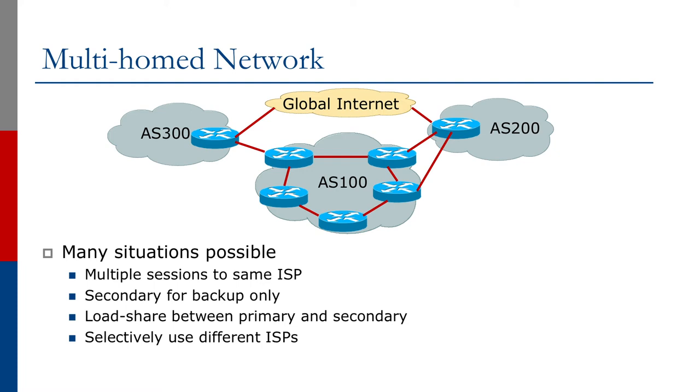We could have one AS providing backup to the other, or maybe one of the two links between AS100 and AS200 provides backup to the other link. How to tackle this is really the goal of the next set of examples in this series. There is no magic BGP multi-home command available in any vendor CLI. This is where an understanding of how to implement policies within BGP becomes very important to give an effective solution to this problem.